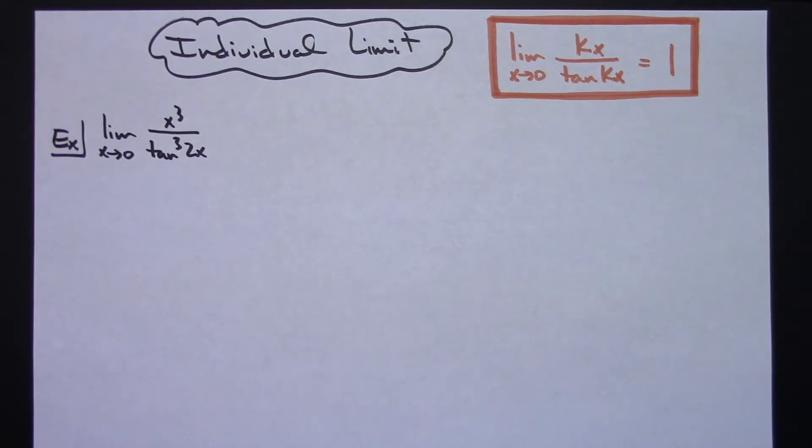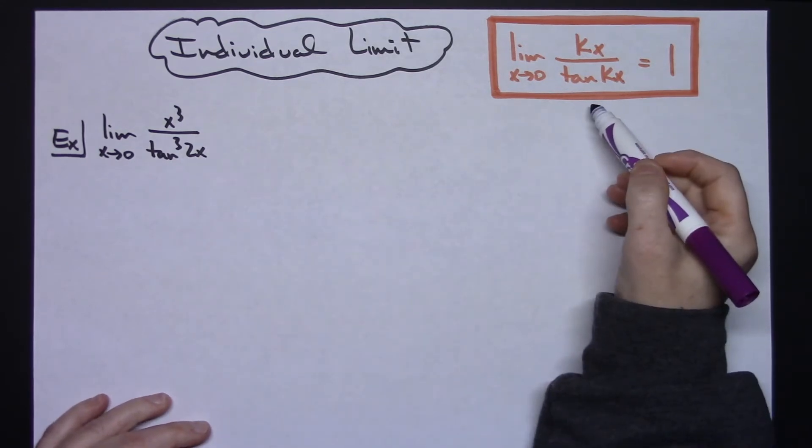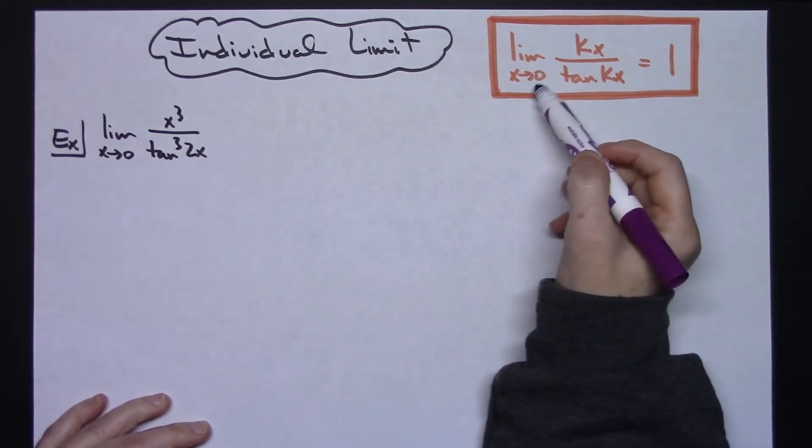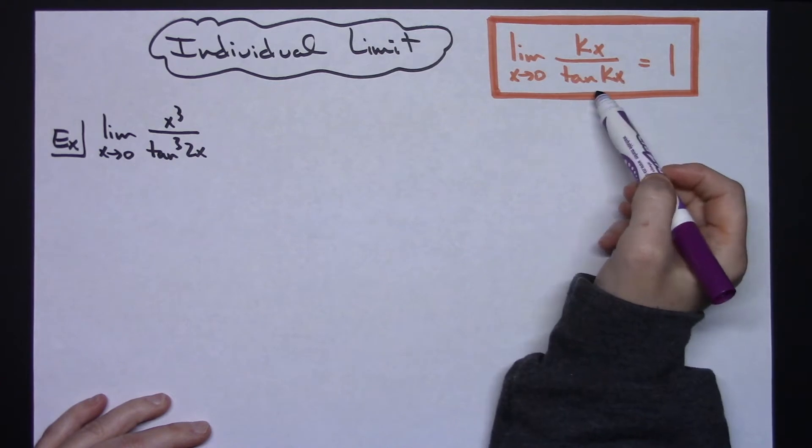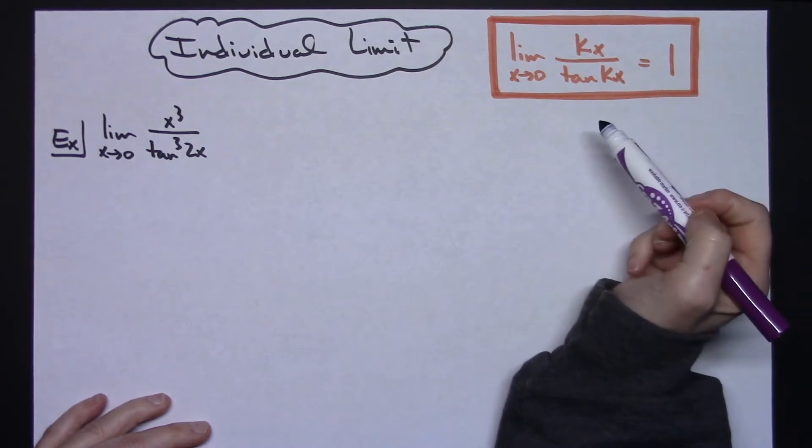In this video I'm going to be working out an individual limit problem. It's going to be a trig problem and I am going to use this property: the limit as x approaches 0 of kx over the tangent of kx equaling 1.